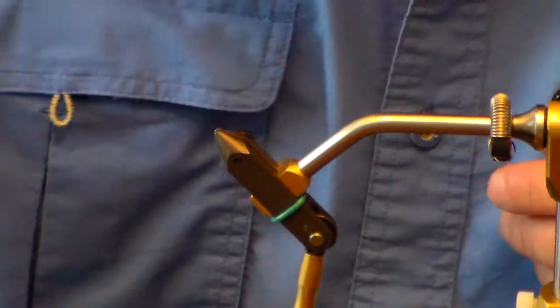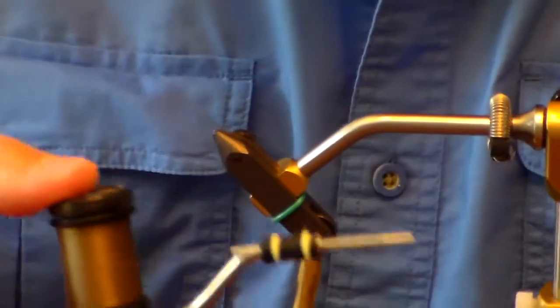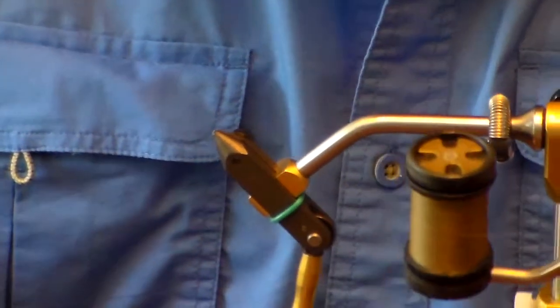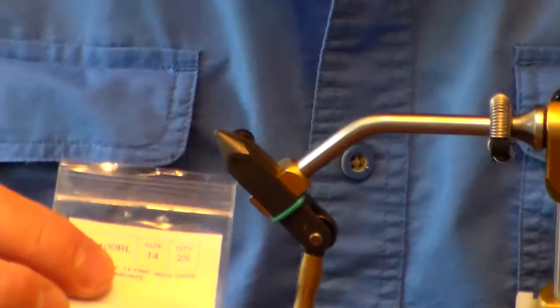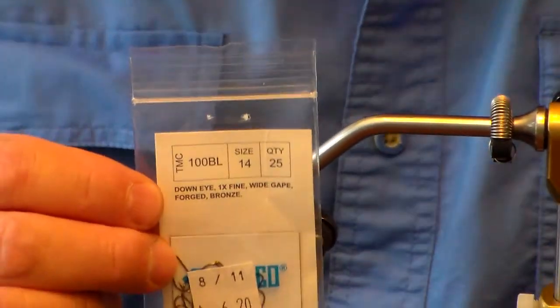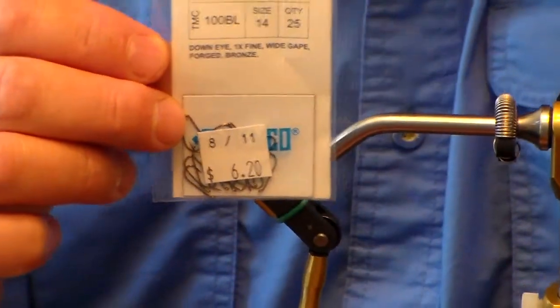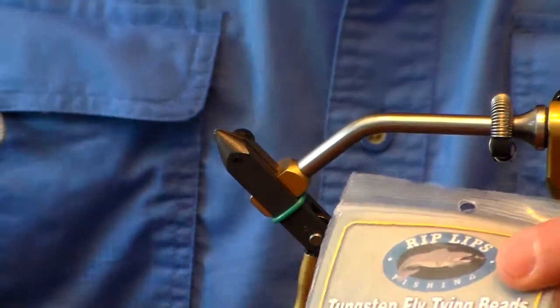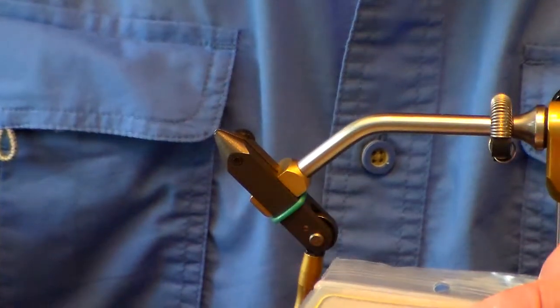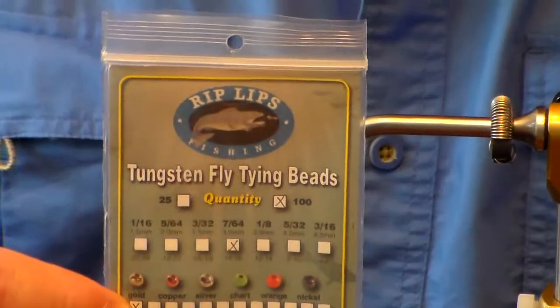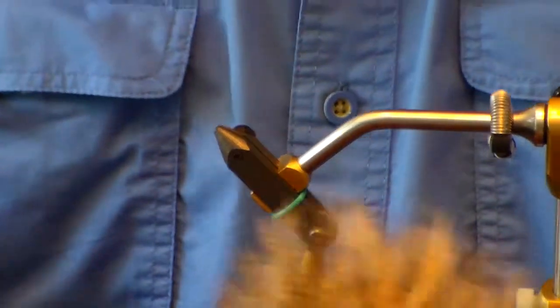We'll start with some olive thread, 6-odd olive thread, some No. 14 TMC 100 barbless hooks, and we've got some 764 tungsten bead, and some Colt de Leon tailing material.